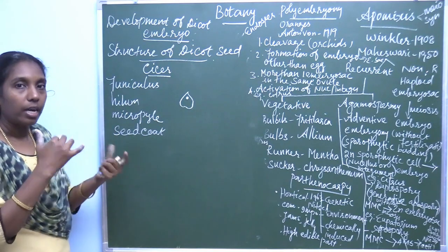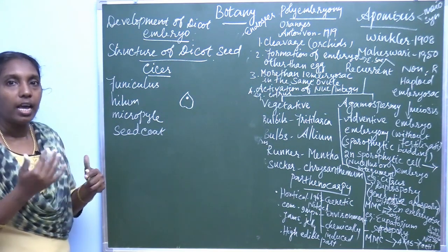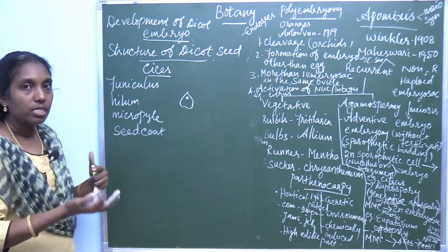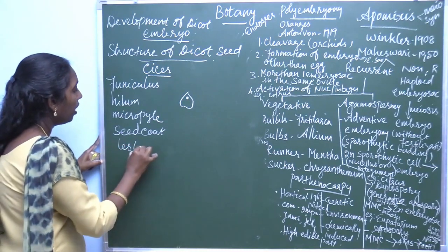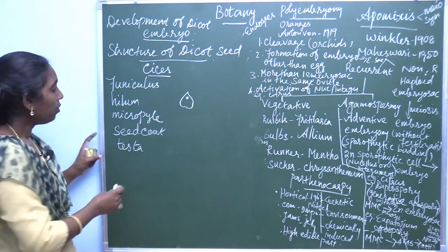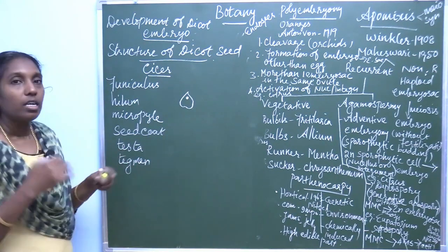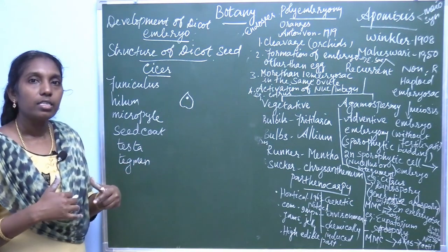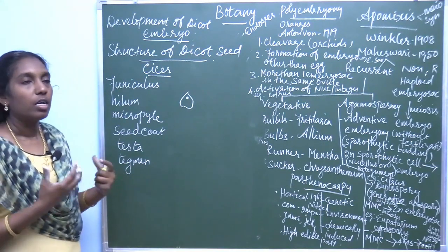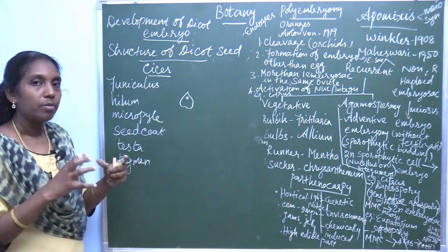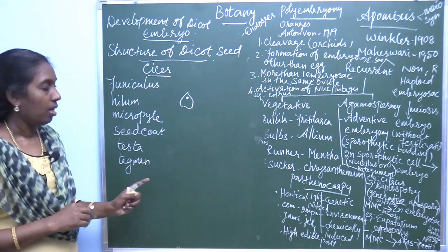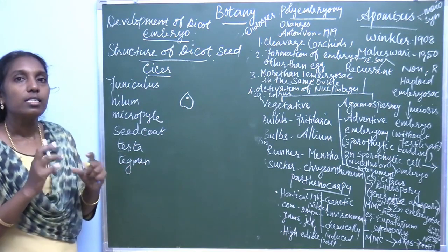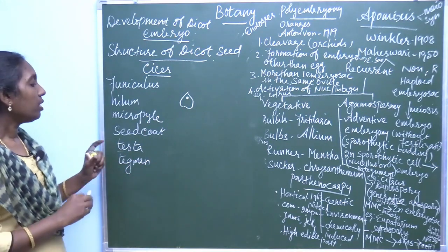There are two types of integuments: outer integument and inner integument. The outer integument is converted into the outer seed coat called testa, and the inner integument is converted into the tegmen. The name of the seed coats are testa and tegmen. In some seeds, testa and tegmen fuse together and form a single layer. The outer testa is hard and thick, while the inner seed coat is very thin.